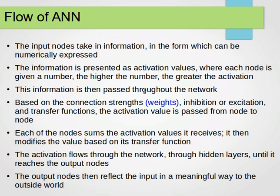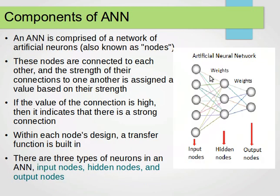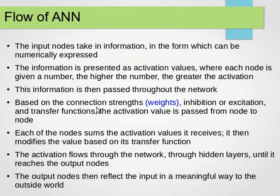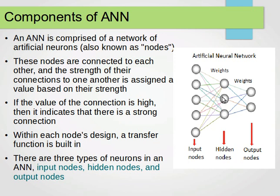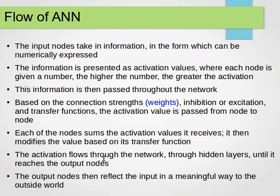This transformation is then passed through the network. Based on the connection strengths, or weights, each connector has a weight. Based on these weights, we get inhibition or excitation — these come from the biological theory of neural networks. Based on the transfer function as well, the activation value is passed from node to node. Each node sums the activation values it receives, then modifies the value based on its transfer function. Each node receives the weighted sum, sums them up, and passes the output, which becomes an input to the next layer.